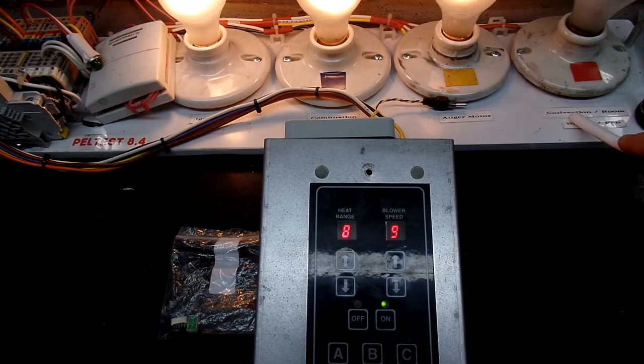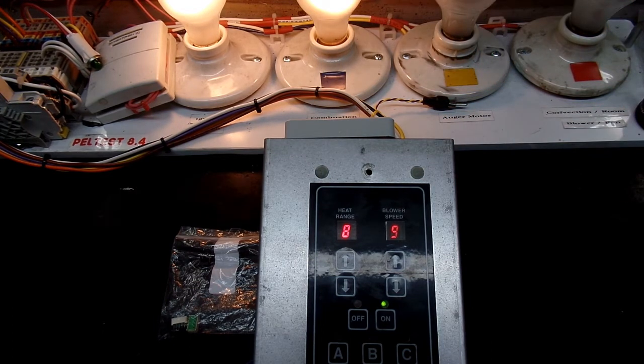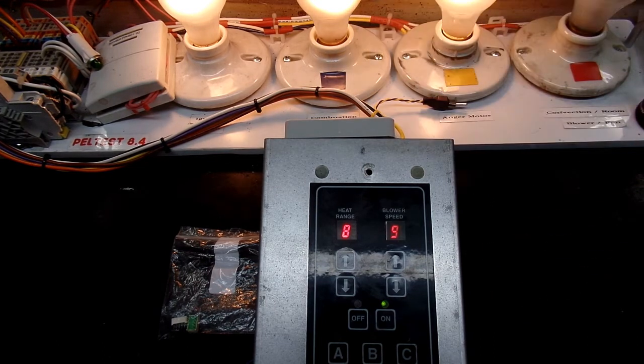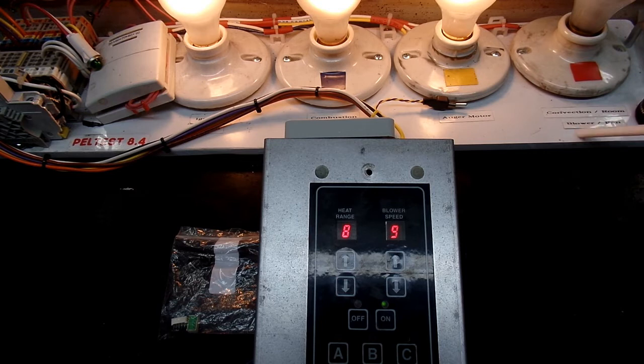I talked a little bit about the convection fan not being on in this controller. I do know that the solid state relay does work because I manually tested it and I'm happy with the performance of that. What I just don't have is how the controller turns it on and off and that, according to the manual, is related to a temperature sensor that I don't have but it's in the furnace.